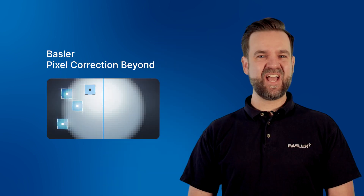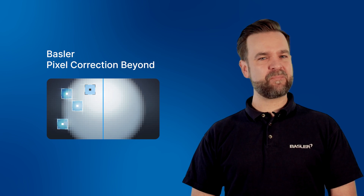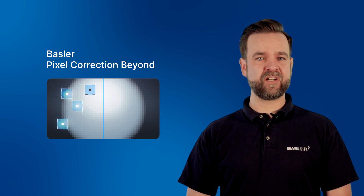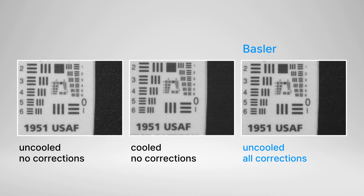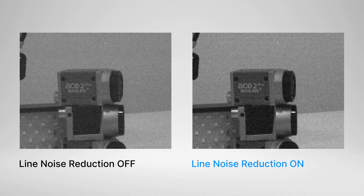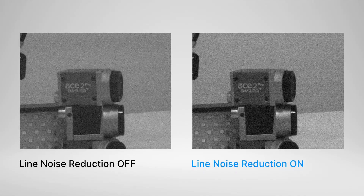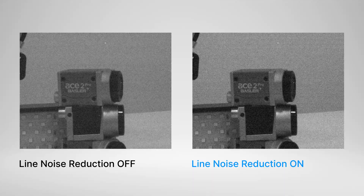The main limitations of InGaAs sensors are unavoidable pixel defects and a higher noise level. Basler's unique pixel correction feature enhances SWIR images within the camera, effortlessly detecting and minimizing the impact of InGaAs sensor defects. In addition, the line noise reduction feature dynamically reduces horizontal lines in the image.